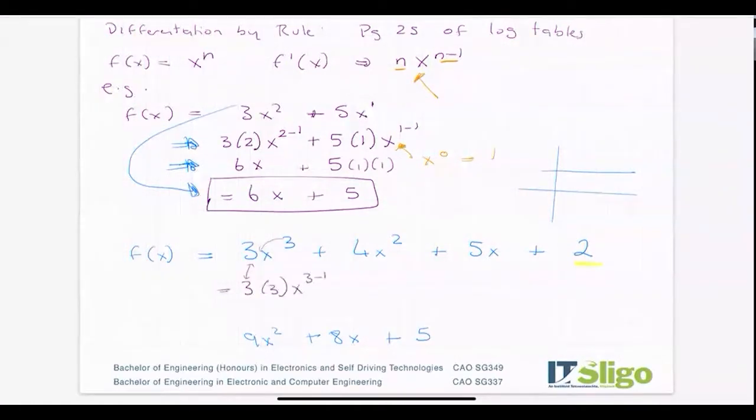That gives you the bottom line: 9x² + 8x + 5. Now I want to show you some of the other rules from the log tables.